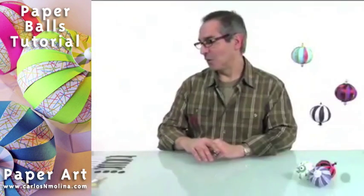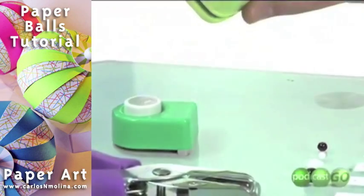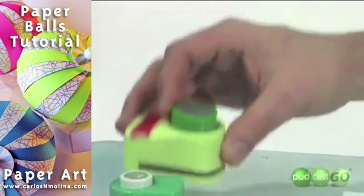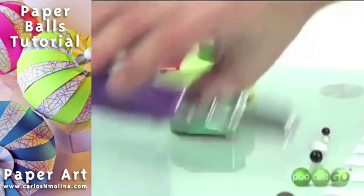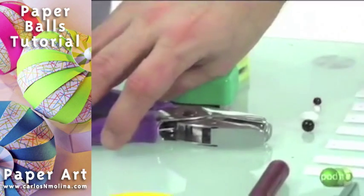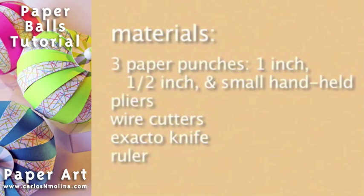You also need some tools. You will need three paper punchers: one circular one inch, one half an inch, and a very small teeny tiny paper punch. You need pliers, wire cutters, and an exacto knife and a ruler.